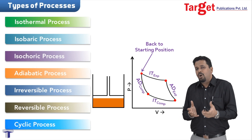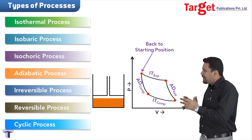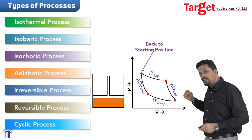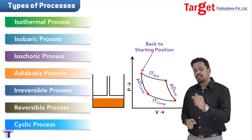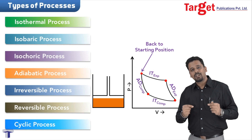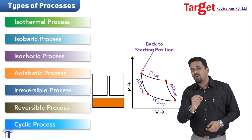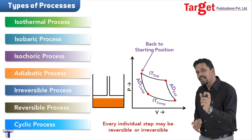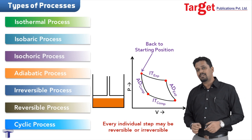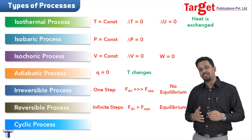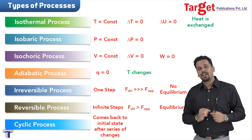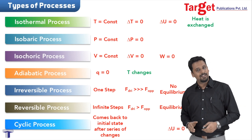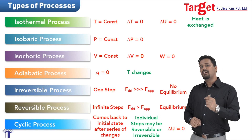A common question is: what is the difference between cyclic process and reversible process? In the Carnot cycle, we had four steps — isothermal expansion, adiabatic expansion, isothermal compression, and adiabatic compression. Each of these individual steps may have been reversible or irreversible. So a cyclic process is made up of different steps, and each step may be reversible or irreversible.